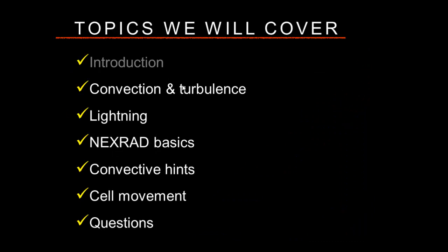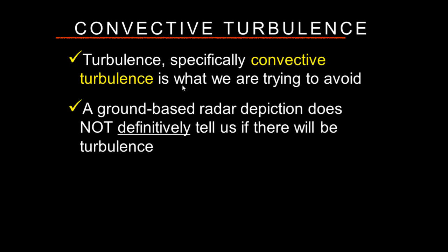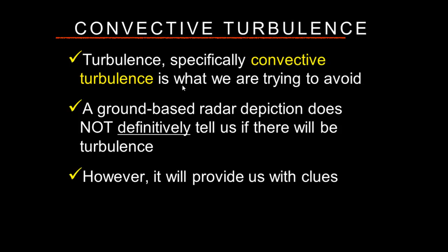Let's talk about convection and turbulence. Convective turbulence is really what we're trying to avoid, though there's other non-convective turbulence we want to stay away from as well. The ground-based radar image you look at for preflight or in-flight doesn't definitively tell you there's going to be turbulence, but it provides clues and shows certain signatures we want to avoid.